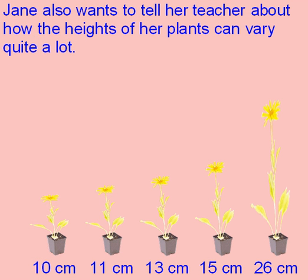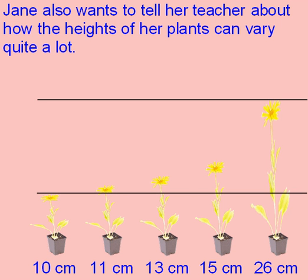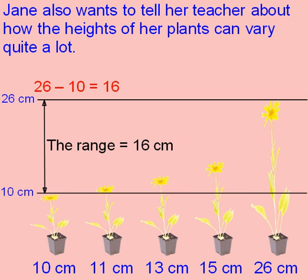Although Jane has taken in her typical flower to show her teacher how tall they grow, she would also like to show her teacher how much the heights can vary. What she decides to do is look at her smallest flower and her tallest flower as well. Her smallest flower is 10 centimetres tall and her tallest flower is 26 centimetres tall. She looks at the difference between these two heights. We call this the range, and the range is 16 centimetres.